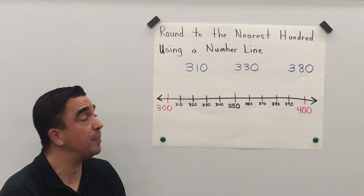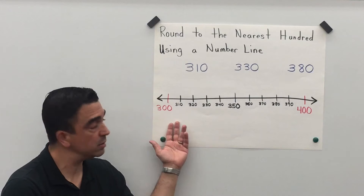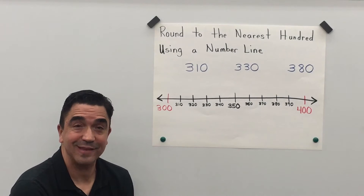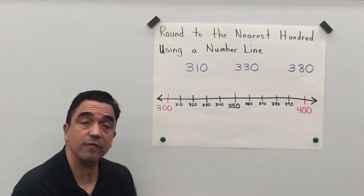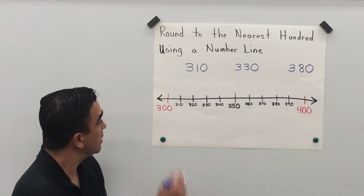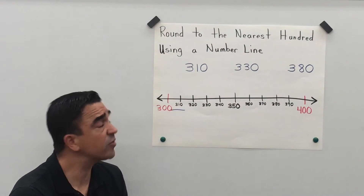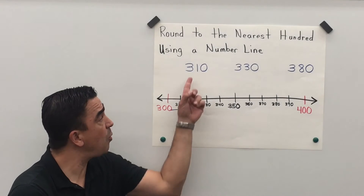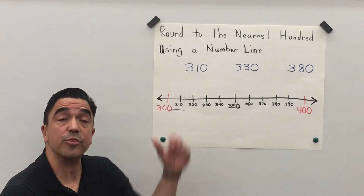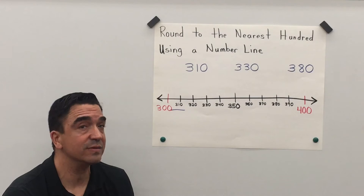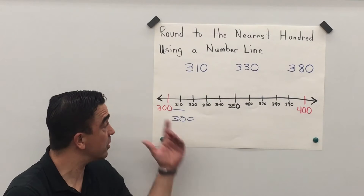Alright, let's take a look at our first number: three hundred ten. Now let's look at our number line from three hundred all the way to four hundred. Is three hundred ten closer to three hundred or closer to four hundred? The one in the tens place is going to tell the three to stay the same. So when we round three hundred ten to the nearest hundred, we get three hundred — it's closer to three hundred.